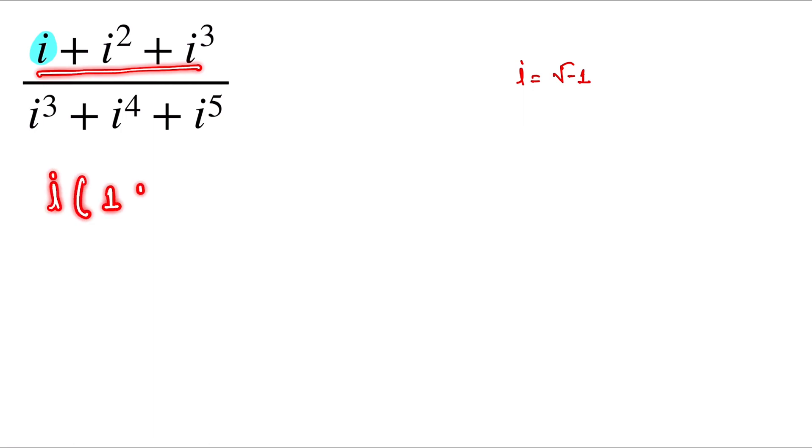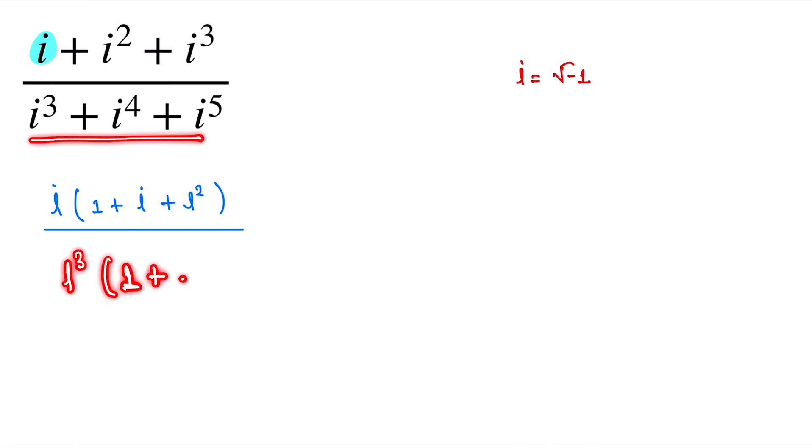Here we take the common i. This one is 1 plus i plus i squared, and here we take the common i cubed. So it is 1 plus i plus i squared.